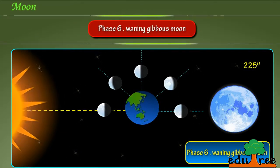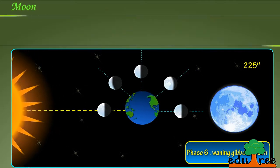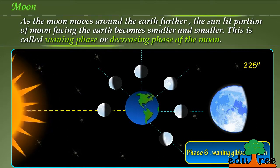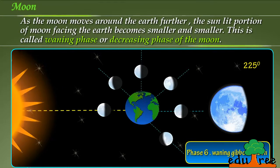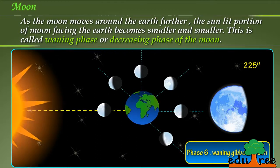Phase 6: Waning gibbous moon. As the moon moves around the earth further, the sunlit portion of moon facing the earth becomes smaller and smaller. This is called waning phase or decreasing phase of the moon.